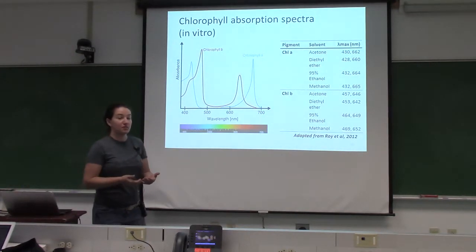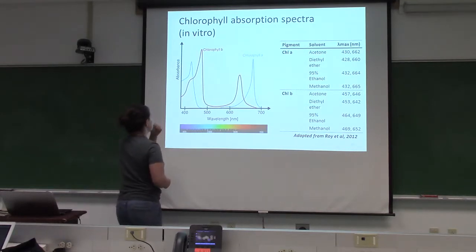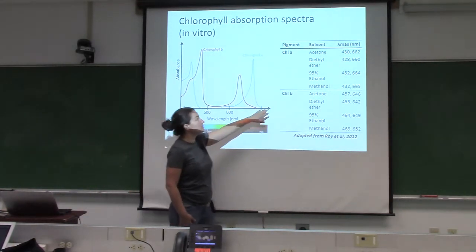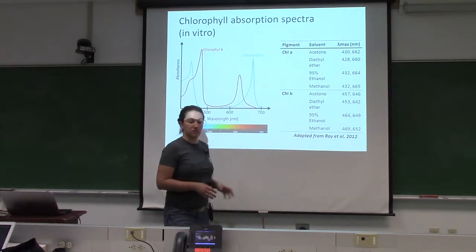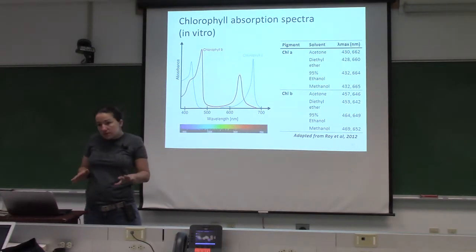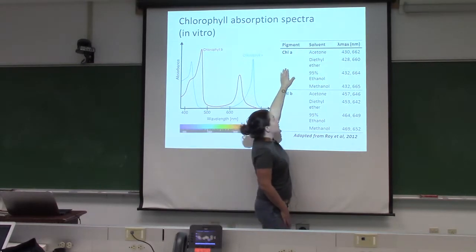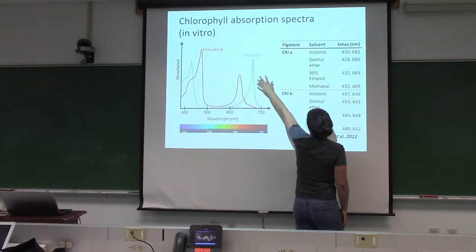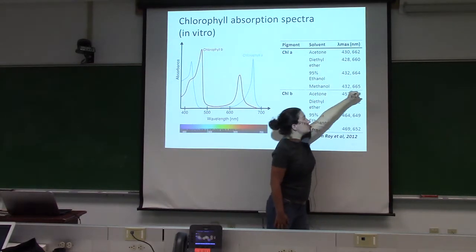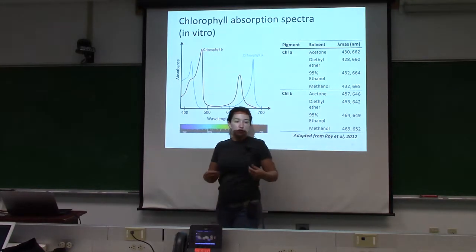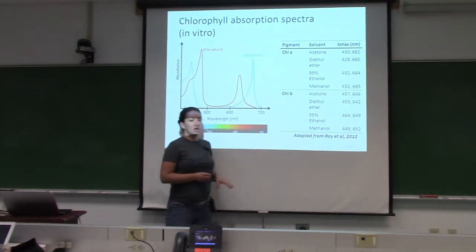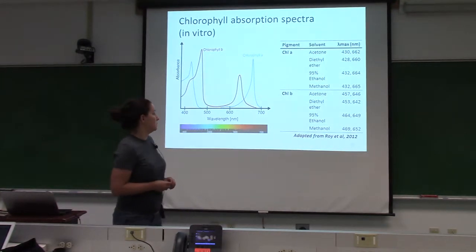Colleen talked about how important chlorophyll is, and she discussed the absorption spectra of chlorophyll A and B, noting that peaks change based on solvent. Take the molecule of chlorophyll and put it in different solvents — just because of polarity, the molecule starts acting differently optically. If you put pure chlorophyll A in acetone, your two absorption maxima are at certain positions. In diethyl ether you get a 2 nm shift; in ethanol, a 4 nm shift; methanol is very similar to ethanol. The polarity of the medium changes the absorption peaks.